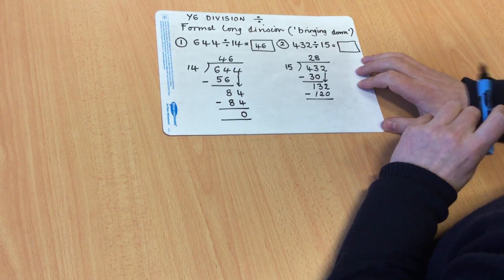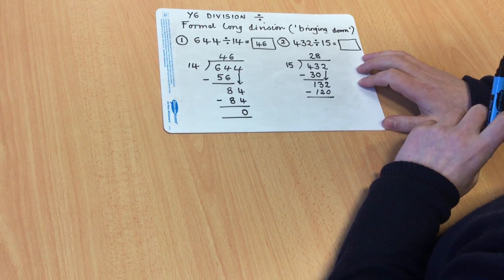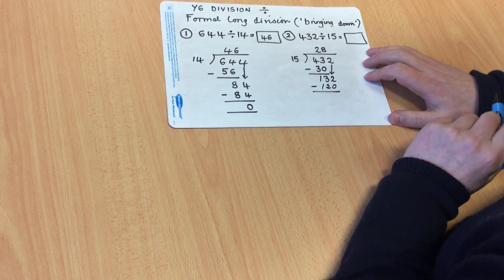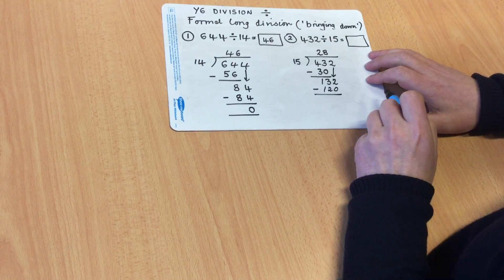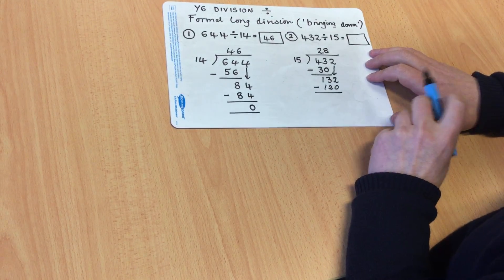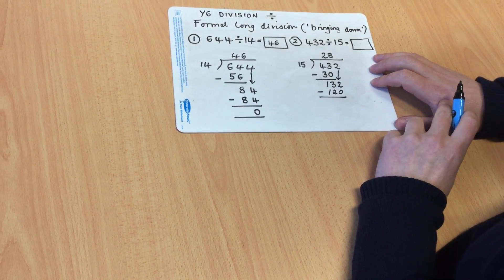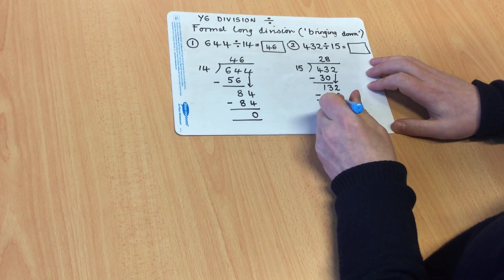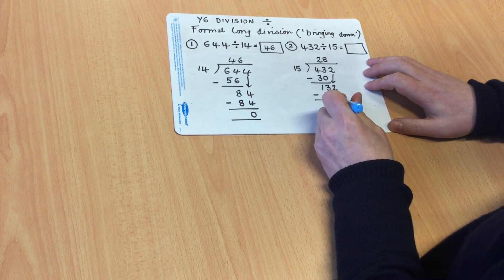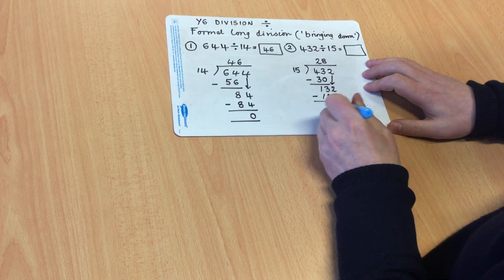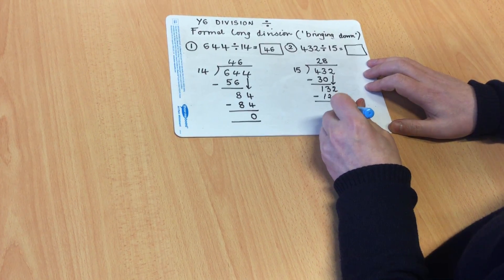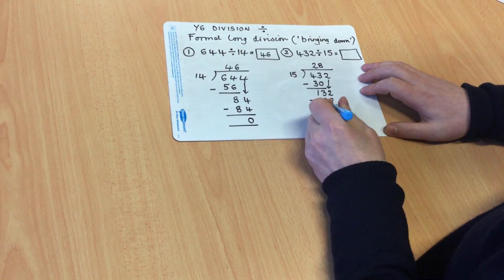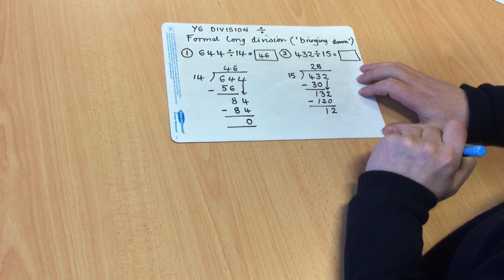I found there are 8 lots of 15 in 120. So find the difference between the two: 132 subtract 120 is 12. 2 subtract 0 is 2, and 3 subtract 2 is 1.